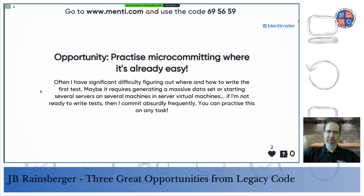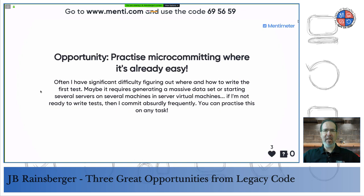Maybe it even makes better sense to call it nano-committing or pico-committing — however often you commit now, do it more often, absurdly often, more often than feels comfortable. When you're committing this frequently, you're creating an undo — a bunch of undo spots in your change history that allows you to compensate for the fact that you don't even have the tests you want to run yet. Maybe you can't justify running manual tests more than once every few hours, or your automated tests are so slow they only run overnight.